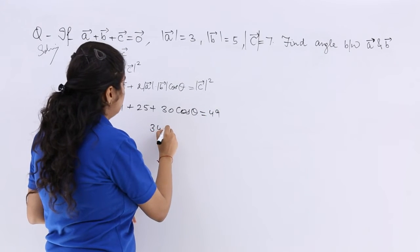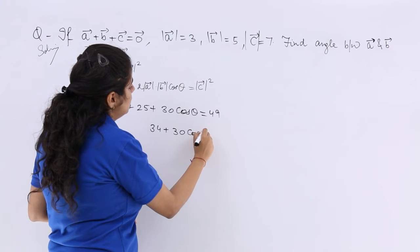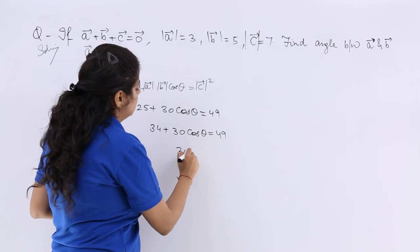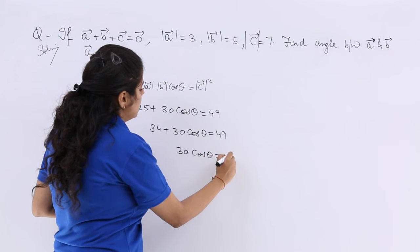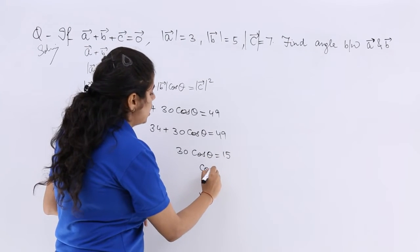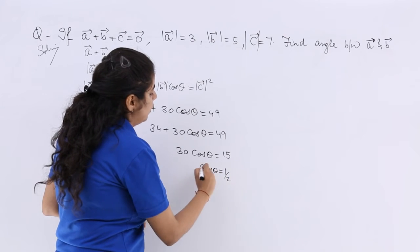So 34 plus 30 cos theta is equal to 49. So 30 cos theta is equal to 15. So cos theta is equal to 1 by 2.